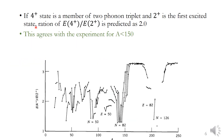The third prediction is: if the 4+ state is a member of the two-phonon triplet and 2+ is the first excited state, then the ratio E(4+)/E(2+) is predicted to be 2.0. The experimental results show that this ratio is roughly 2.0 up to A ≈ 150, in reasonable agreement with the prediction.